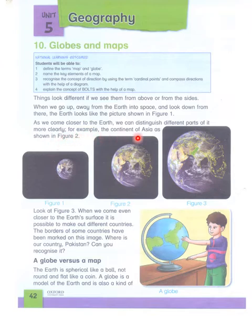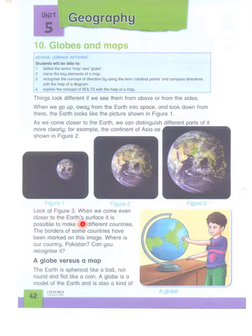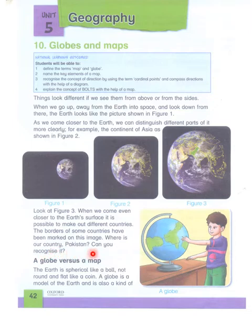For example, the continent of Asia as shown in figure two. And look at figure three — when we come even closer to the earth's surface, it is possible to make out different countries. The borders of some countries have been marked on this image. Where is our country Pakistan? Can you recognize it? This is Pakistan.